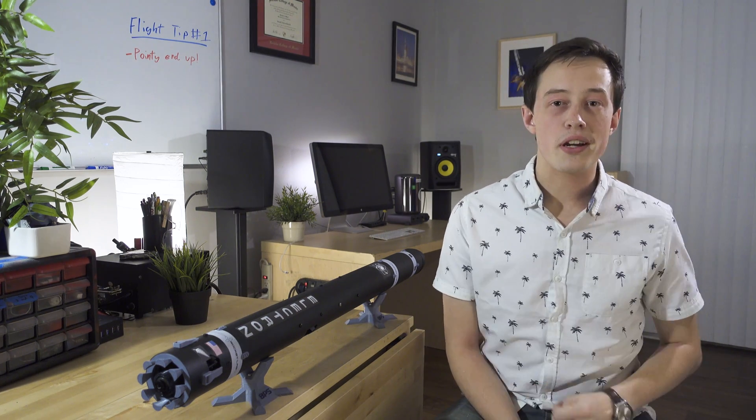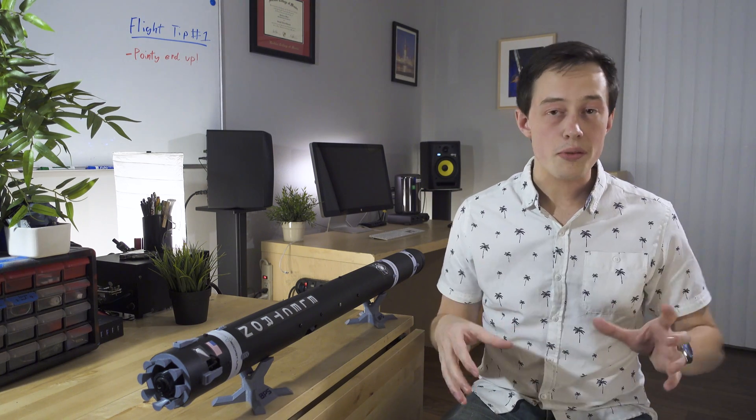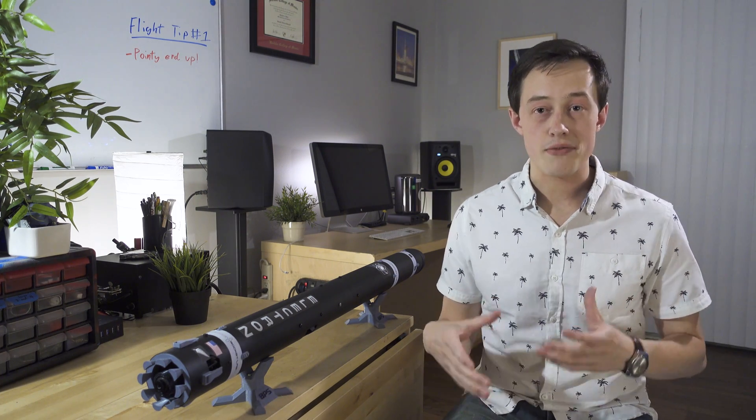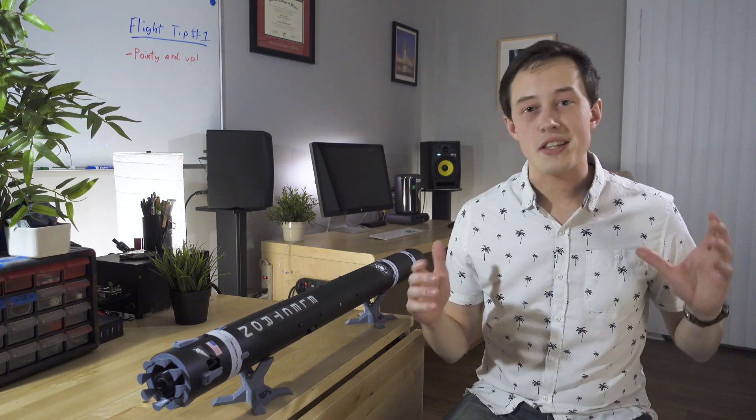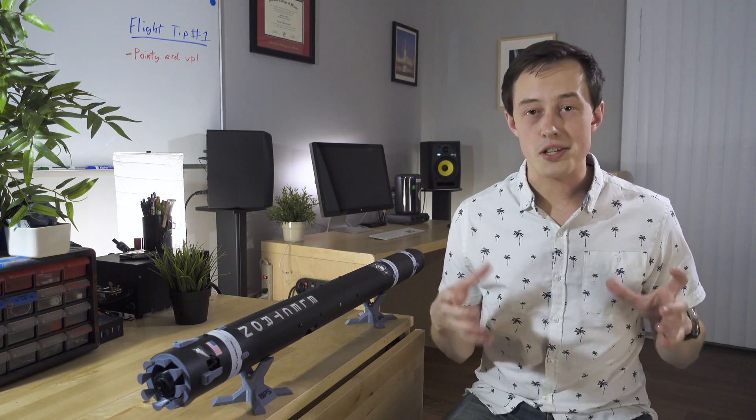Tip number four, don't launch your rocket more than 30 degrees from vertical. This one has to do mostly with the NAR model rocket safety code, or MRSC. The safety code states that you shouldn't launch more than 30 degrees from vertical, and it's a good idea to just adhere to that generally.